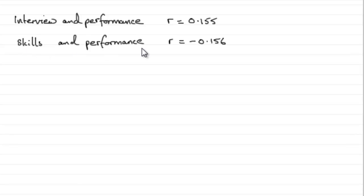And they tell us that for skills and performance, that product moment correlation coefficient R is minus 0.156. So what's this telling us then?